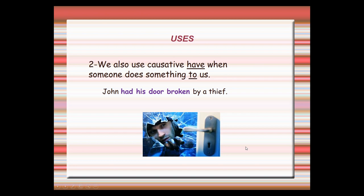Another use of this structure is when we want to express that someone does something to us, not for us. Look at this sentence: John had his door broken by a thief. We have the subject John, have in the past form, his door is the object, and broken is the verb in the past participle form. By a thief is the agent — that is to say, the one who did the action.